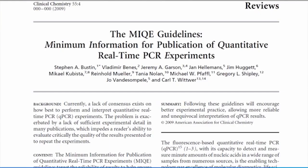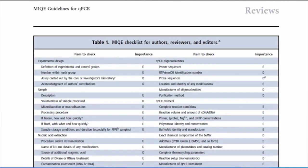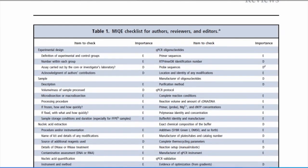MIQE, which stands for Minimum Information for Publication of Quantitative Real-Time PCR Experiments, is a set of guidelines originally published in 2009, then slightly revised in 2011.